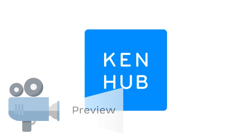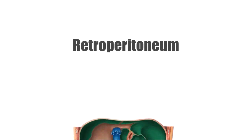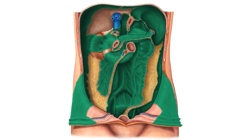Hello everyone, it's Megan from KenHub here and welcome to our tutorial on the retroperitoneum. The retroperitoneum is the collective term for the structures that are located posterior to the parietal peritoneum, which we can see here highlighted in green. During this tutorial we'll be looking at different organs and vessels found in the retroperitoneum, focusing mainly on the image in front of you, which is an anterior view of the abdominal cavity.